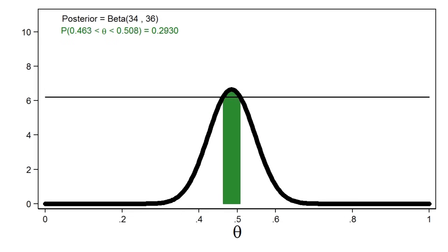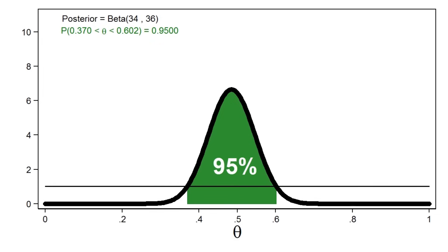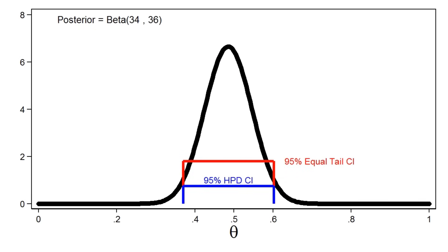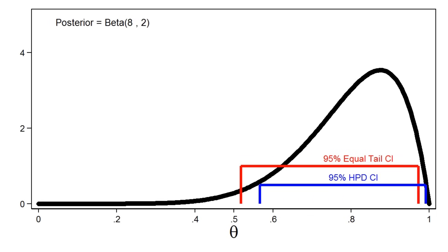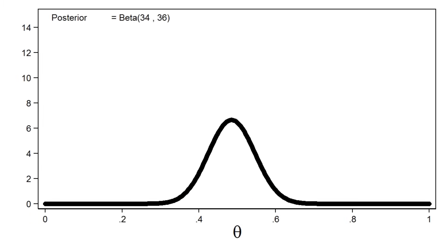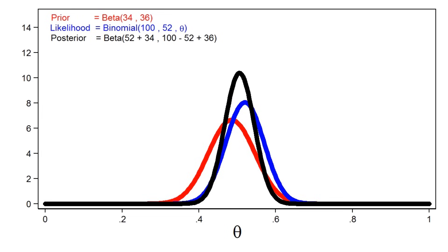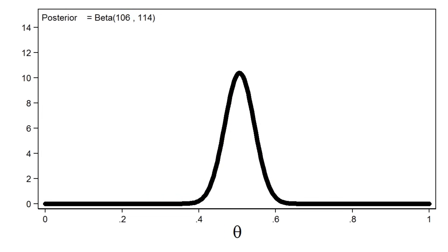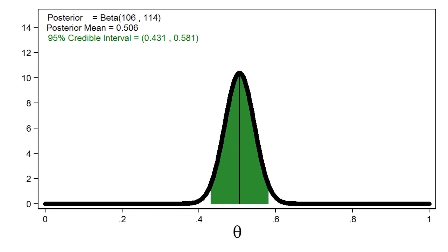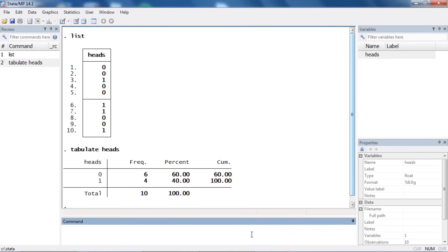Similarly, we can calculate a 95% equal-tail credible interval. We can also calculate a highest posterior density credible interval, also known as an HPD credible interval. The calculation of HPD credible intervals is often described as dropping a horizontal line through the density until the probability within the interval equals 95%. For a symmetric distribution the equal-tail and HPD credible intervals will look very similar, but they will look very different for skewed distributions. One nice feature of the Bayesian approach is that the posterior distribution from a previous study can often serve as the prior distribution for subsequent studies. Here we've used the posterior distribution as the prior for an experiment with a sample size of 100, producing an even narrower posterior distribution.